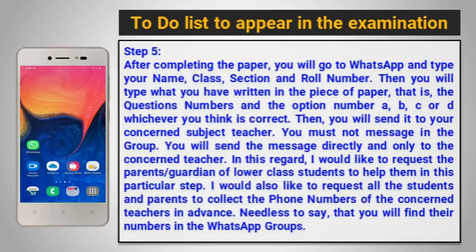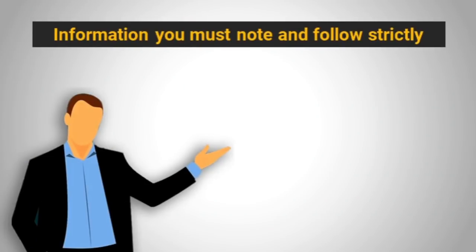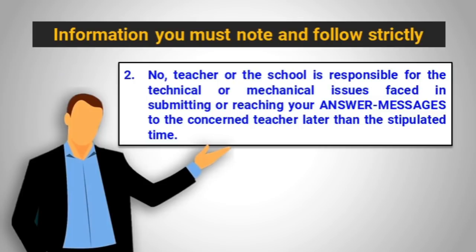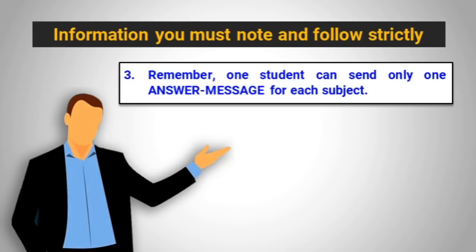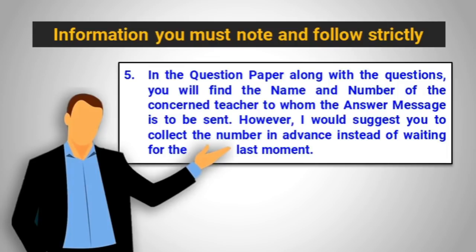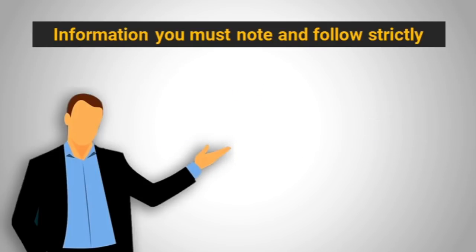Needless to say, you will find their numbers in the WhatsApp groups. Additional information which you must note and follow strictly: 1. No answer message should be accepted after the given time. 2. No teacher or the school is responsible for technical or mechanical issues faced in submitting or reaching your answer messages to the concerned teacher later than the stipulated time. 3. Remember, one student can send only one answer message for each subject. 4. In terms of any disputes raised, the decision of the school authority is final and above all, on which no individual judgment will be entertained. 5. In the question paper, along with the questions, you will find the name and number of the concerned teacher to whom the answer message is to be sent. However, I would suggest you to collect the number in advance instead of waiting for the last moment.